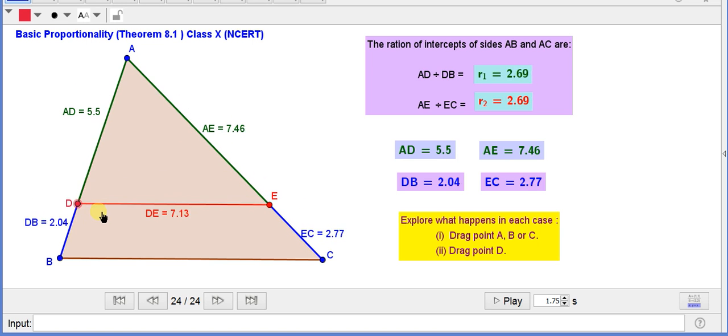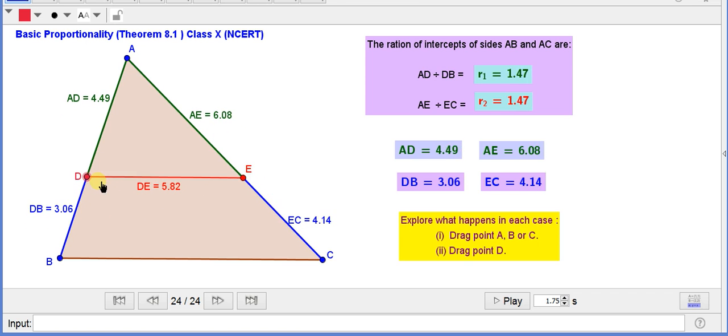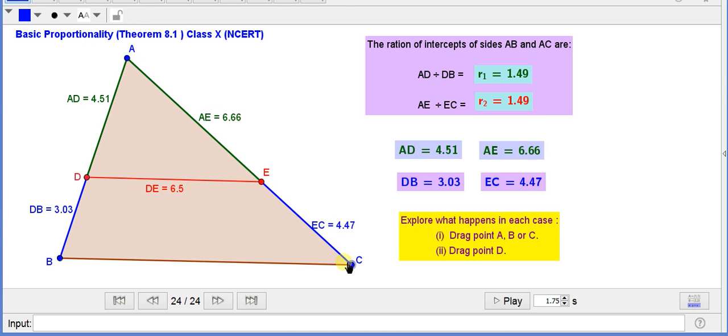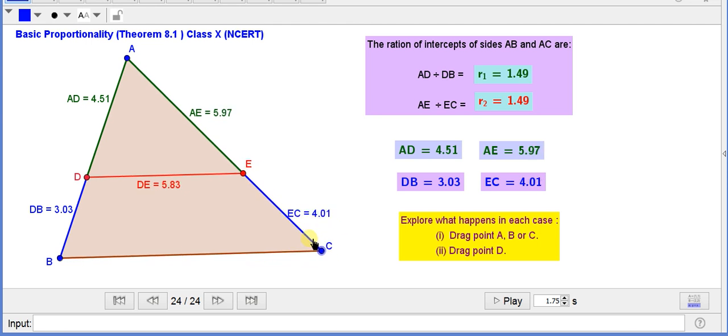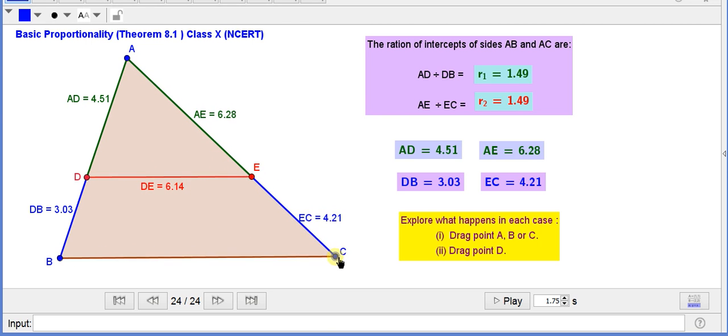If I will drag only point C, see what will happen. Only the value of AE and EC are changing, remaining parameters are constant, they are fixed.